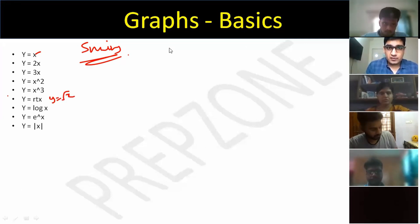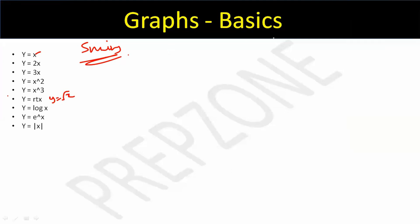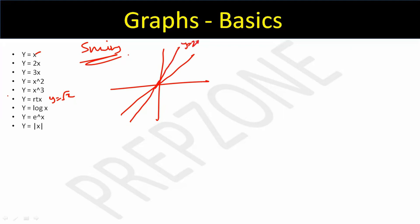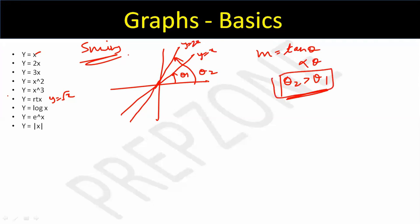I'll give the answers. y = x is just a straight line through the origin. y = 2x has a higher slope than y = x, and y = 3x has an even higher slope. Slope is tan θ, so the angle θ₂ for y = 2x is greater than θ₁ for y = x. y = 3x is steeper still.